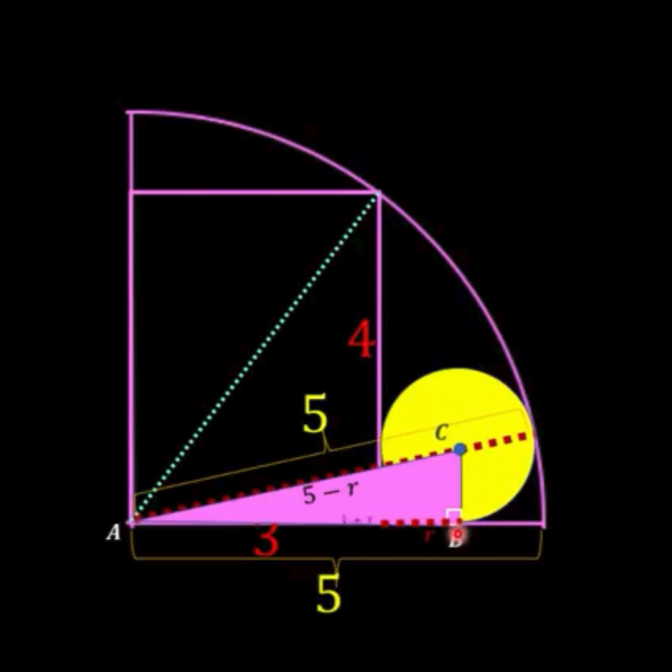So therefore segment AB can be represented as 3 + r and segment BC is also a radius of the small yellow circle. So that's represented as small r.